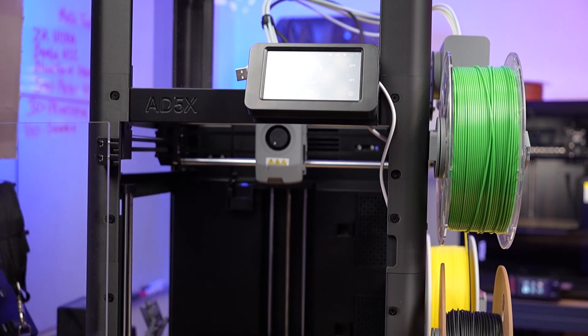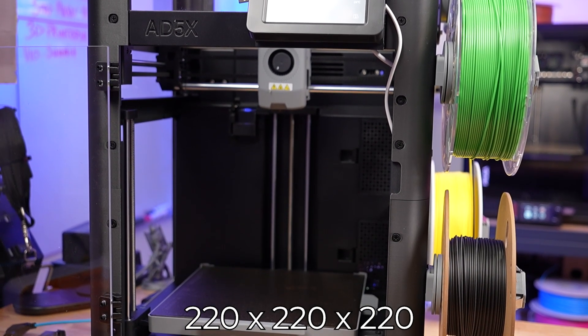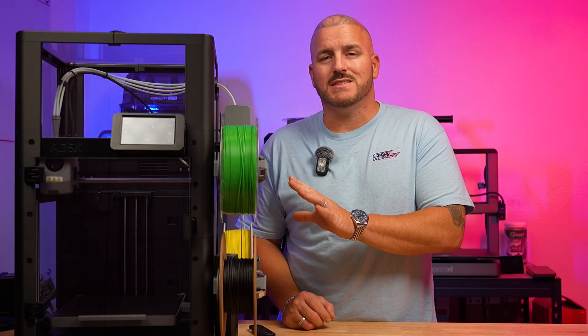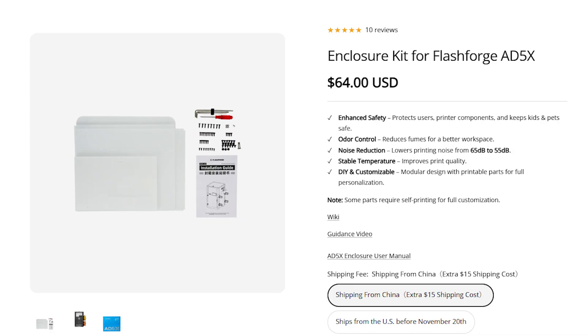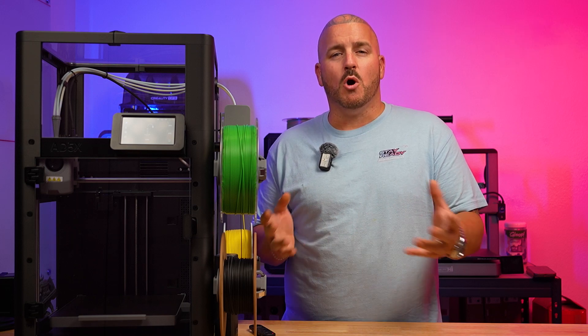So the 85X is a CoreXY printer with the build volume of 220 by 220 by 220. It doesn't come with an enclosure, but it has the option of actually 3D printing the enclosure pieces and buying the plexiglass from FlashForge's website for $49. This enables you to be able to print a lot more filaments than you typically would on an open frame printer.